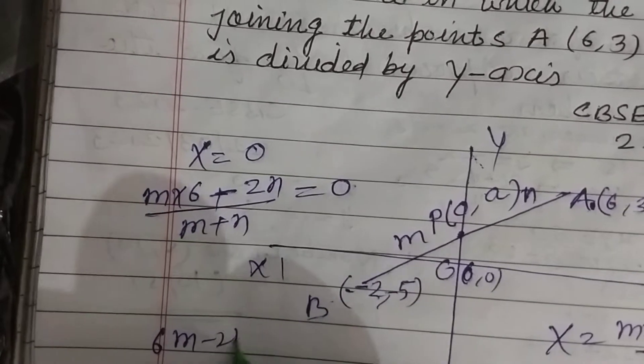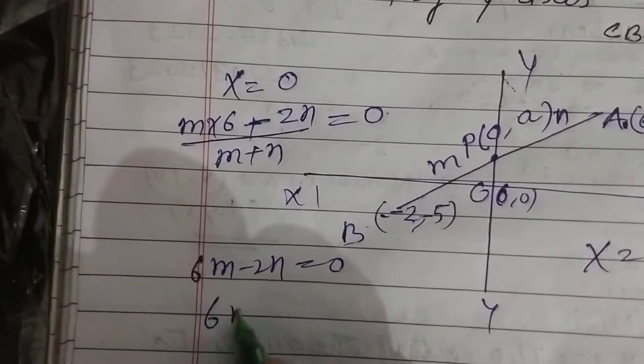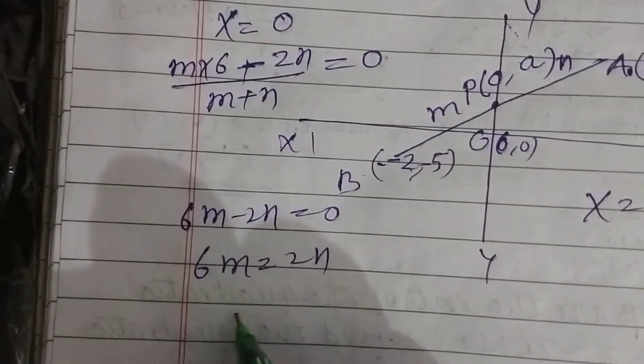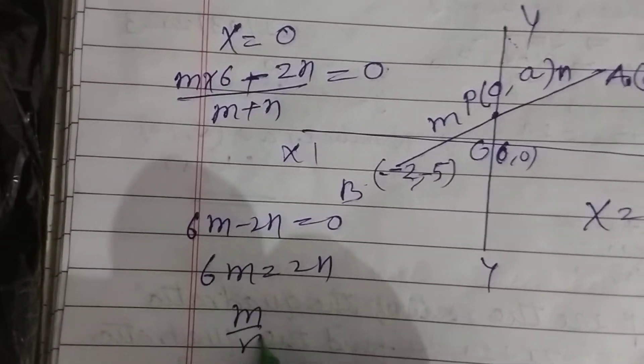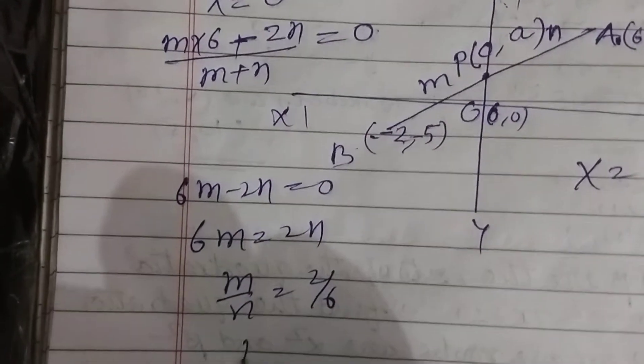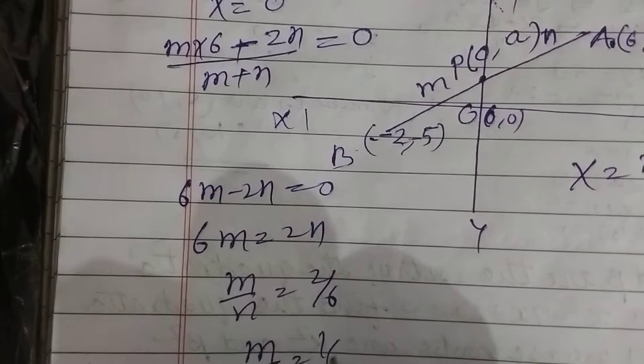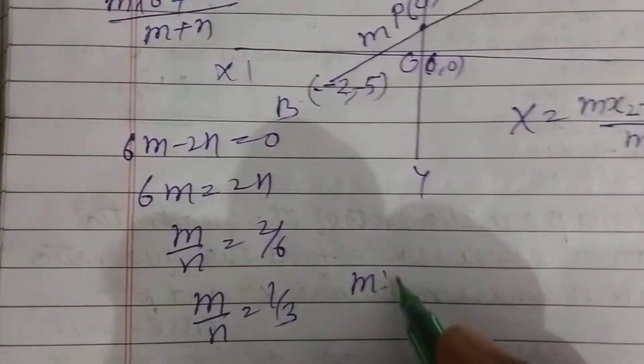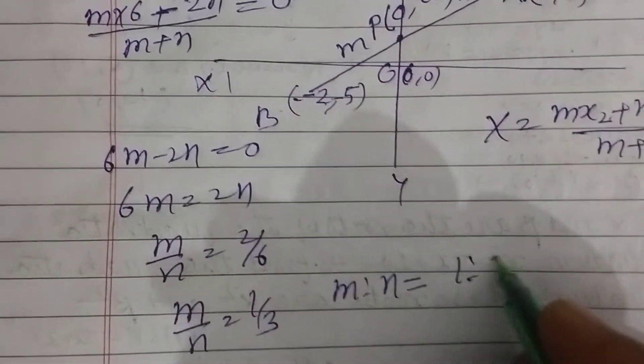Therefore 6M minus 2N equal to 0. 6M equal to 2N, and M upon N equal to 2 by 6, or M upon N equal to 1 by 3. It means M ratio N equal to 1 ratio 3.